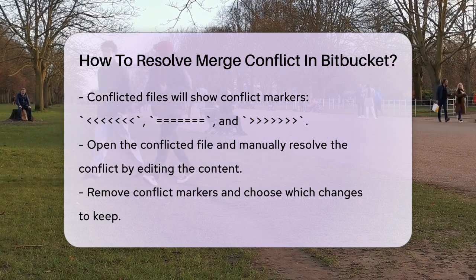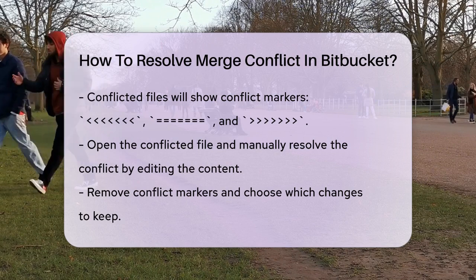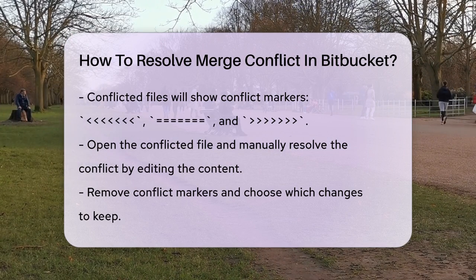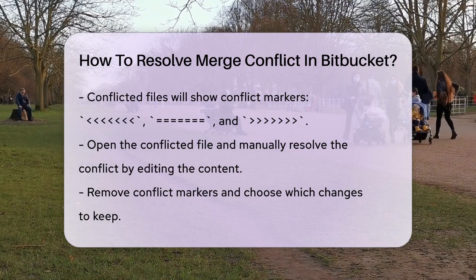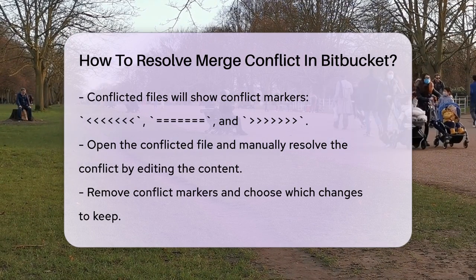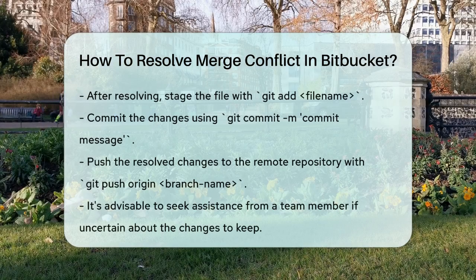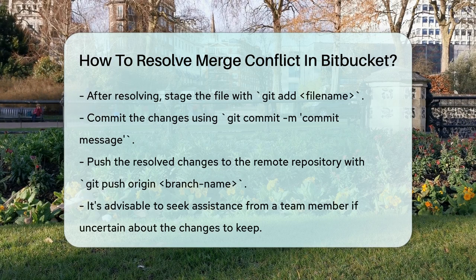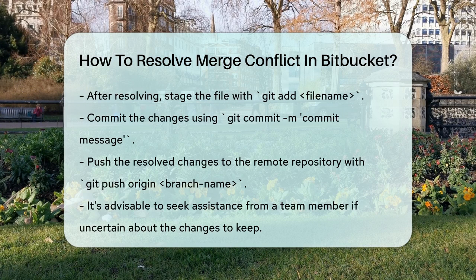After resolving the conflicts, you need to tell Git that you've fixed the issues. Use git add filename to stage the resolved file and then commit the changes with git commit -m commit message. Finally, push the resolved changes to the remote repository using git push origin branch name.